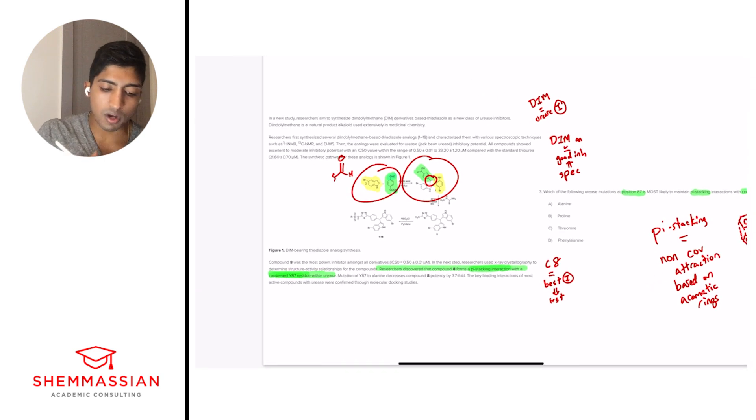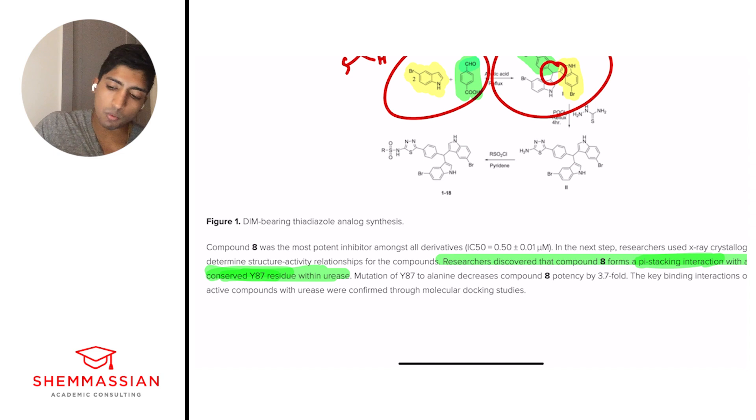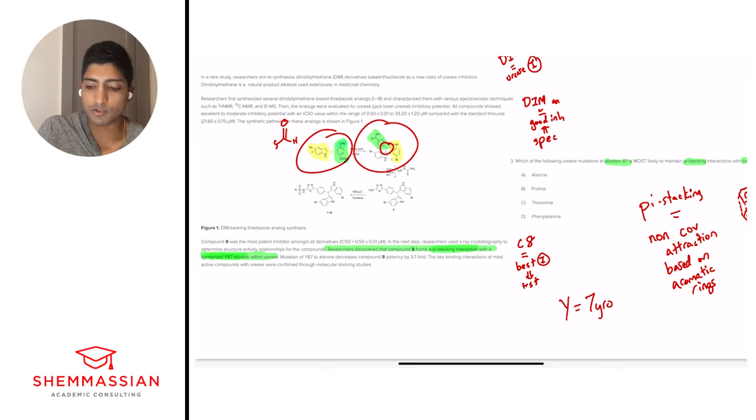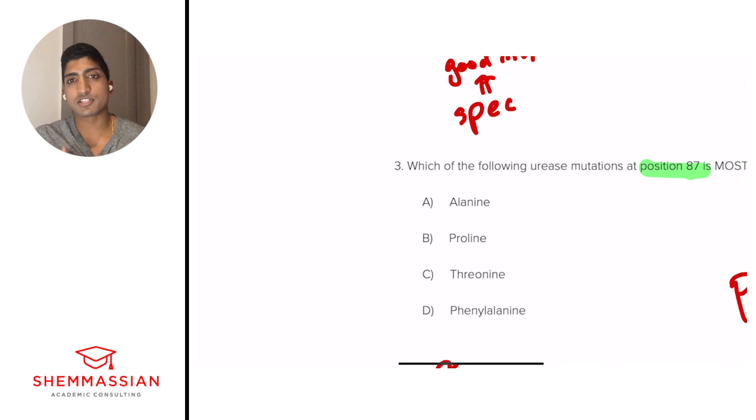So now we have to ask ourselves, we're looking at position 87, and we're trying to change that from one amino acid to another amino acid. And what does that require? Well, that requires our aromatic rings to be maintained. So we have Y87. And what is Y? Well, Y is tyrosine. And so we should recognize this to be an amino acid with the backbone and the side chain to be an aromatic ring attached to a hydroxyl group. So what does this look like similar to? Well, we need something to have an aromatic ring. So which of our answer choices has an aromatic ring?